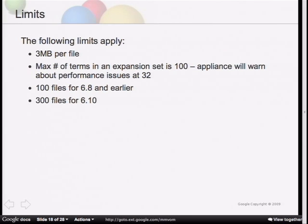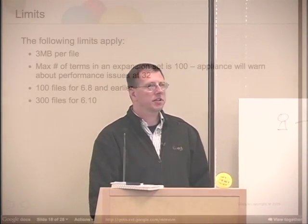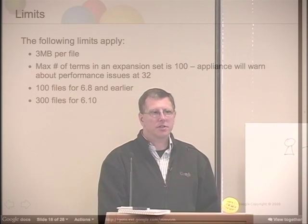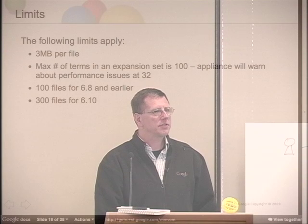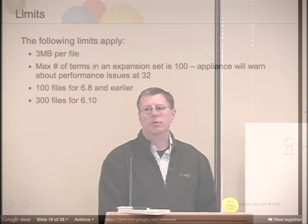Regarding limits: each query expansion file can be up to 30 megabytes. If you need more, you can create and upload another file. The maximum number of terms in an expansion is 100, but the appliance will warn about performance issues at around 32 terms. It's better to break large sets into multiple lines. You can have 100 files for version 6.8 and earlier, or 300 files for version 6.10 and higher. Query expansion does take a toll on performance, so if you see slower search response, this might be a cause.